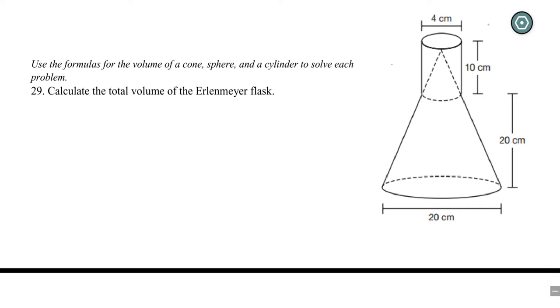So we're going to find the total volume of this Erlenmeyer flask, I think that's how you say it. And so that's made up of a cone right here and then it's made up of a cylinder.